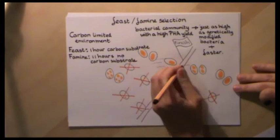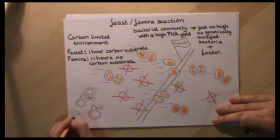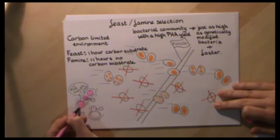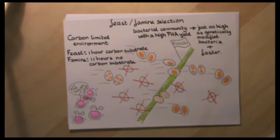With this feast-famine selection, it was possible to create a community in paper mill wastewater that had just as high PHA product yields as genetically modified bacteria, and could even produce PHA faster.